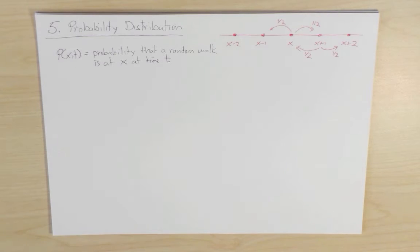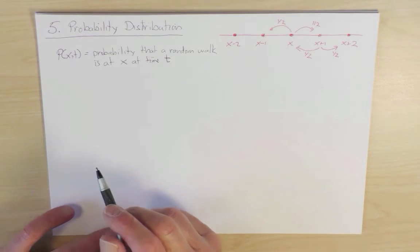With this picture, let me now compute the probability distribution for this random walk. And this probability distribution is calculated by means of something known as a master equation which describes how this probability distribution evolves in time. So how can we be at position x at time t?